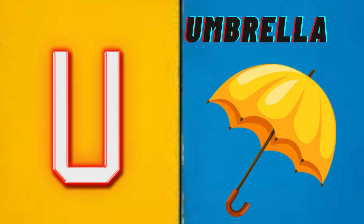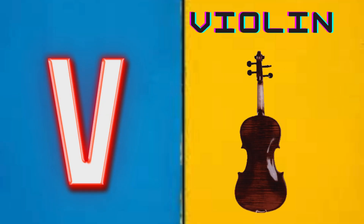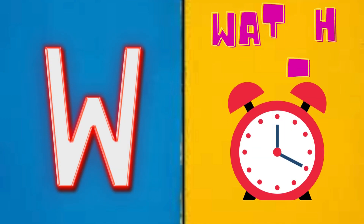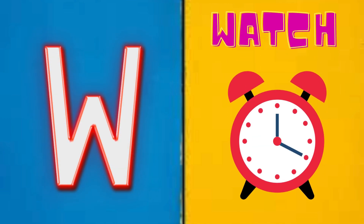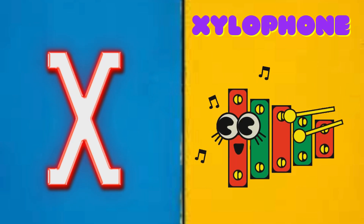U is for Umbrella, U-U-Umbrella. V is for Violin, V-V-Violin. W is for Watch, W-W-Watch. X is for Xylophone, X-X-Xylophone.